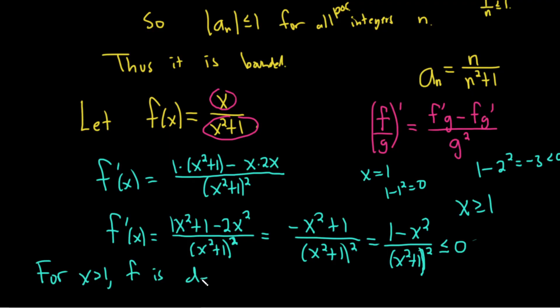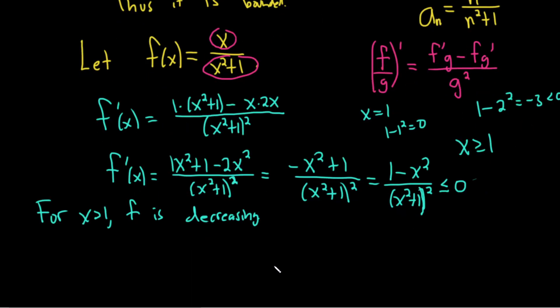f is decreasing. So in this case, our sequence is decreasing. So you just simply say a sub n is decreasing, right? Because if it's decreasing for values of x bigger than one, it's certainly decreasing for integers bigger than one as well. So it is monotonic.